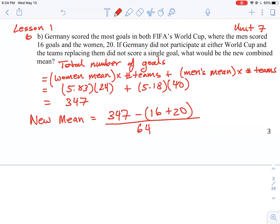So that's why we wouldn't go down to 63. So when we work this one out, we just find that they have 311 total divided by 64. And the new mean is approximately 4.86 goals.